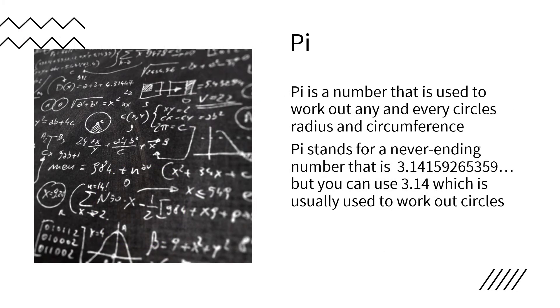Pi is a number that is used to work out any and every circles, radius and circumference. Pi stands for a never-ending number that is 3.14159265359 and so on.